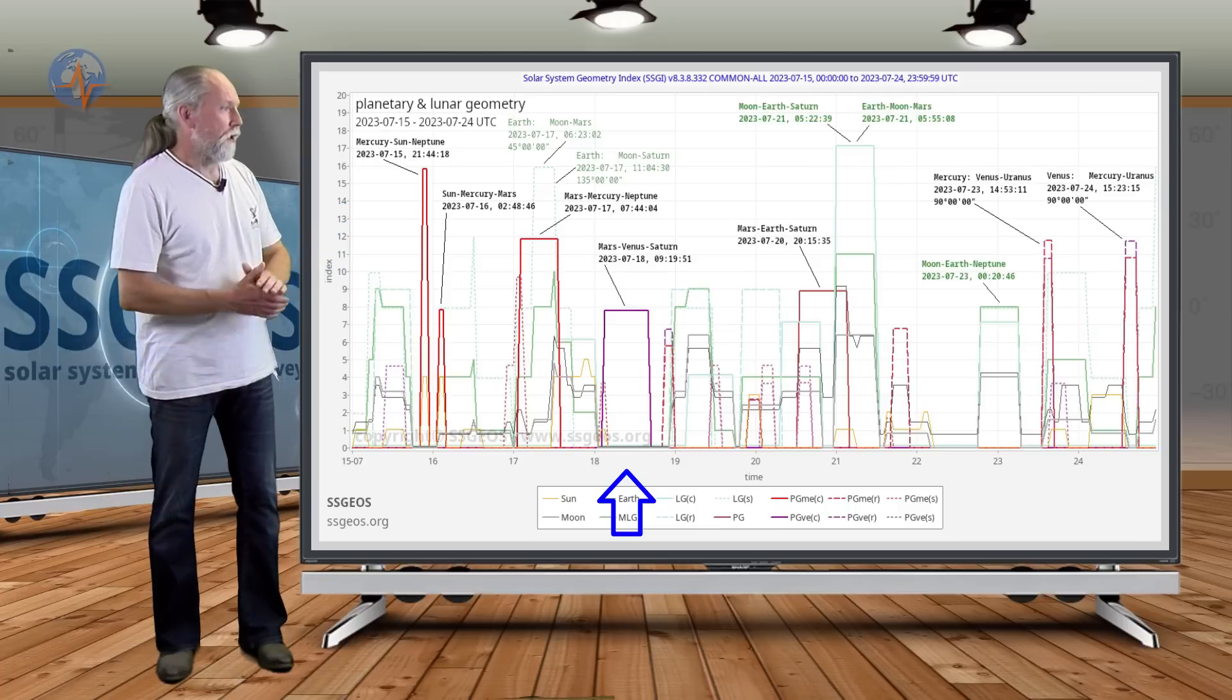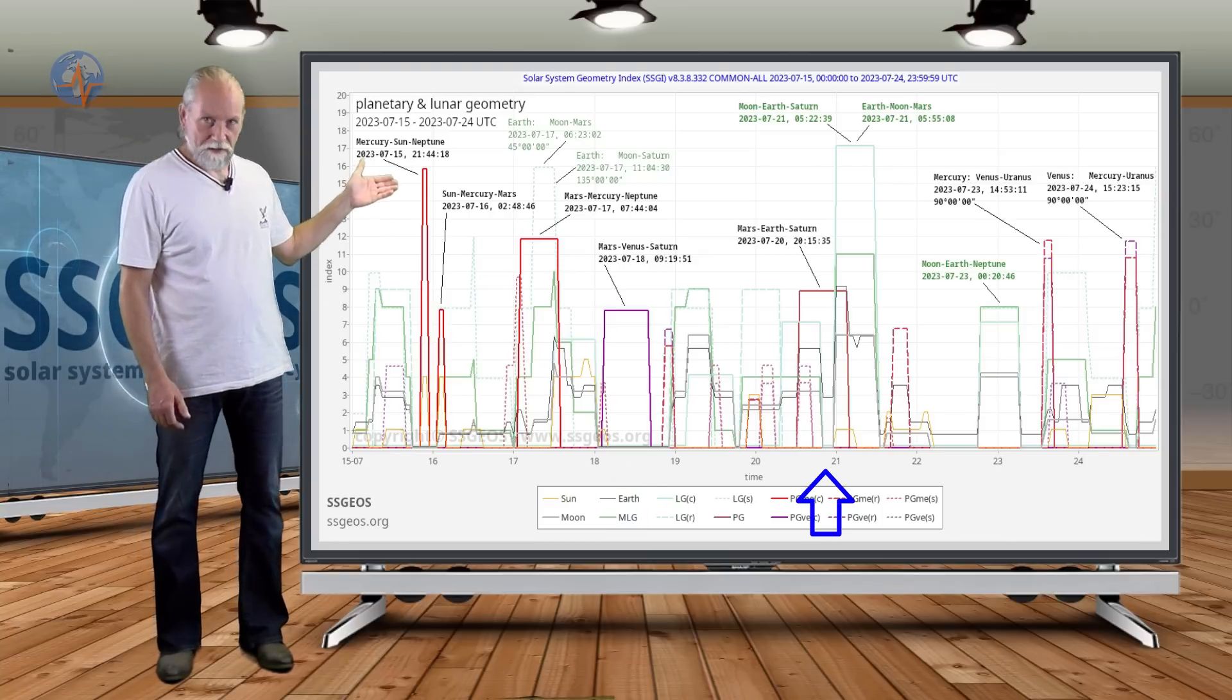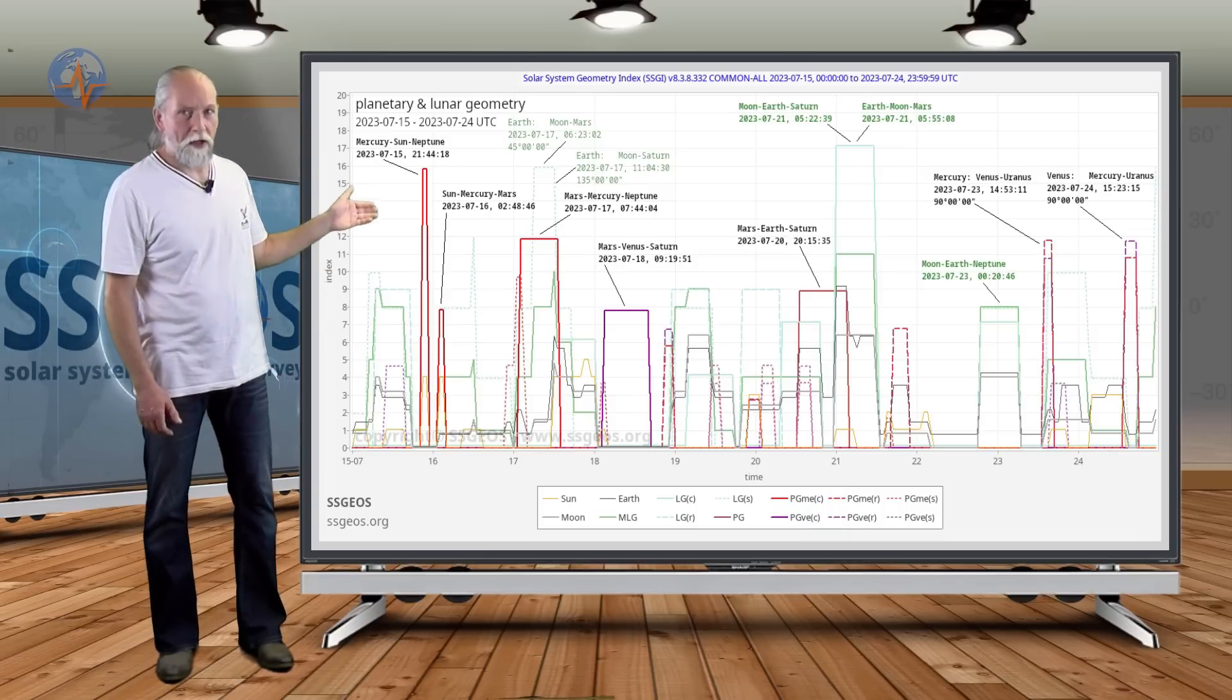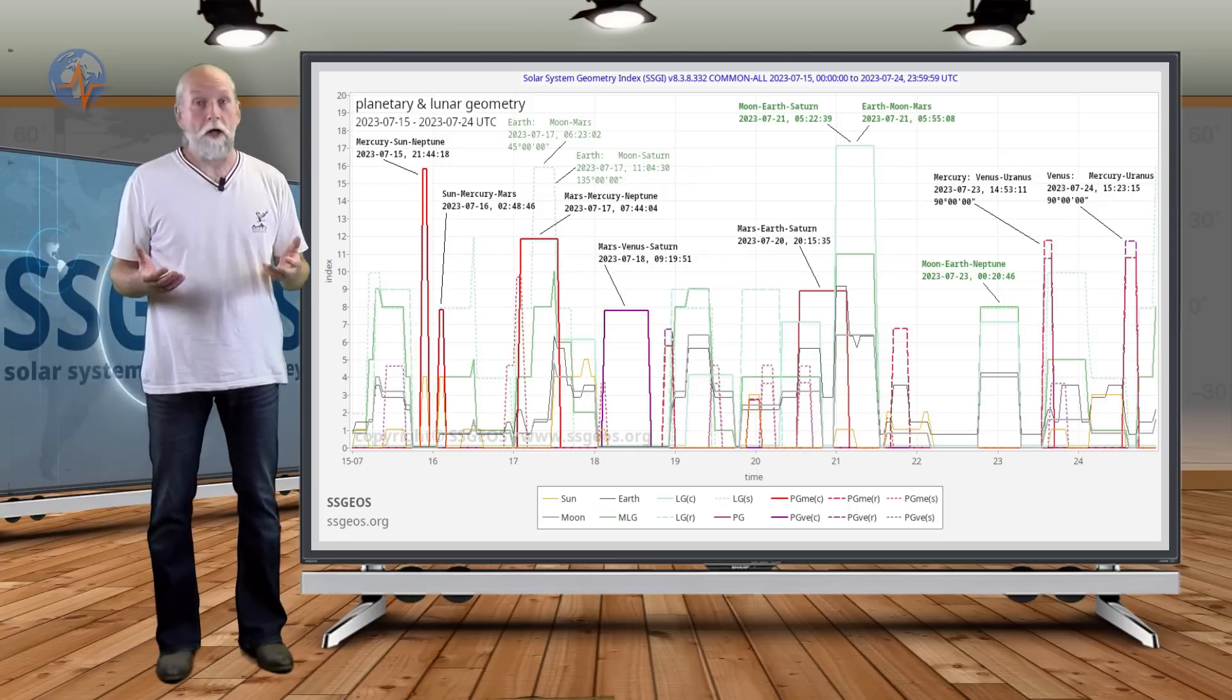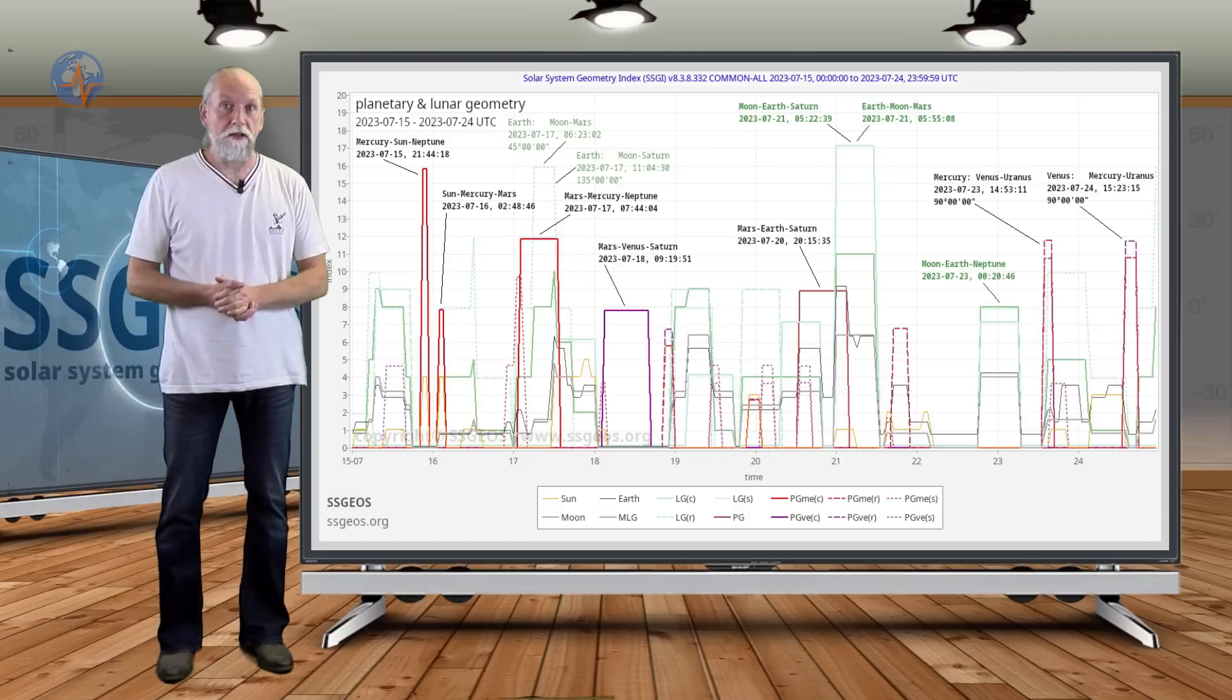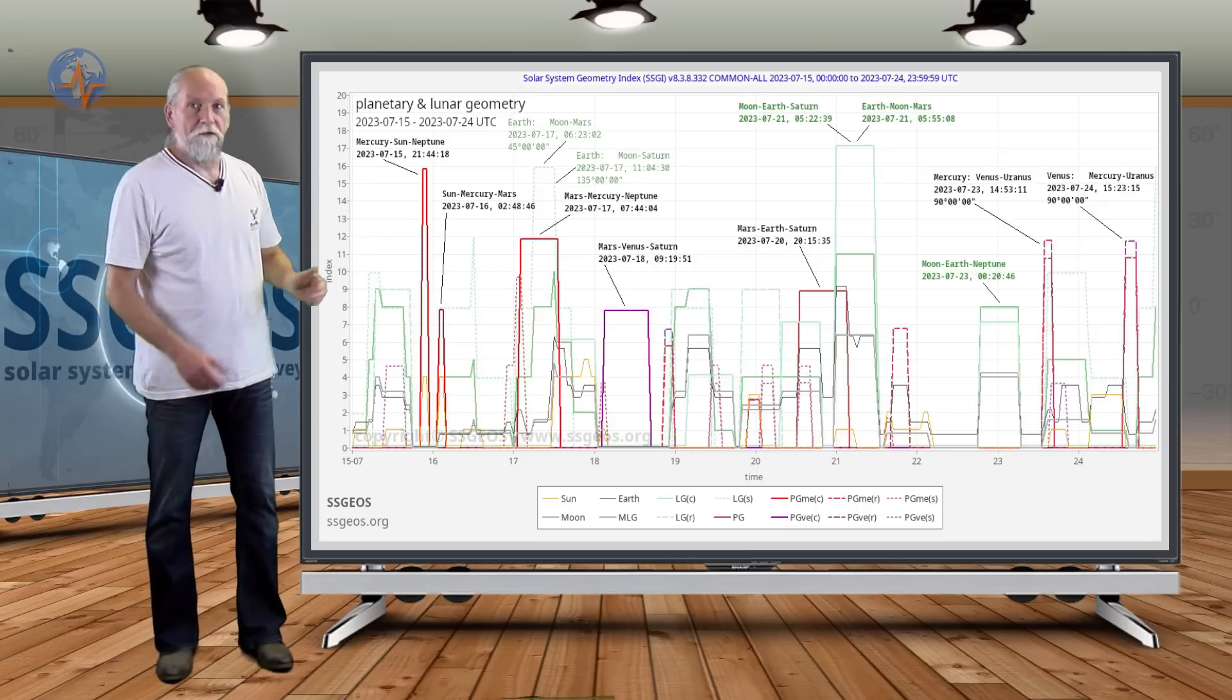On top of that, we also have on the 18th Mars-Venus-Saturn at 19:00 UTC in the morning, and then also finally on the 20th Mars-Earth-Saturn at 2015 UTC. So we have a series of planetary conjunctions, three, four, five actually up until the 20th. We are probably going to see a seismic increase. If it's going to be a lot of magnitude higher five, I'm not sure. A couple of sixes, maybe even a magnitude seven. This is a clustering of planetary conjunctions, so we should see a seismic increase. How exactly that is going to take shape is the question. We have to wait and see, but expect a seismic increase following these planetary conjunctions in the next couple of days.